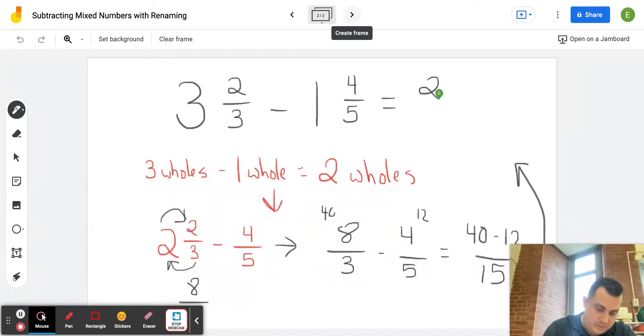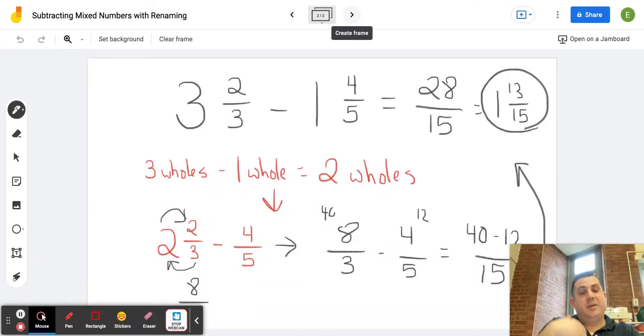And you'll have 28 over 15. Turn this improper fraction into a mixed number. 15 goes into 28 one time with 13 left over, over 15. So we have 1 and 13 fifteenths, and you will see this is in simplest form.